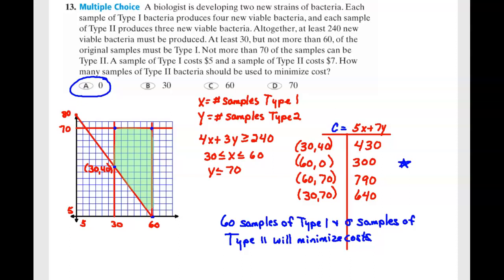At least 30, but no more than 60 can come from type 1. And not more than 70 can come from type 2. Sample 1 costs $5 and sample 2 costs $7. How many samples of type 2 should be used to minimize the cost?